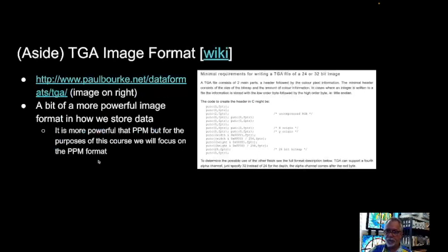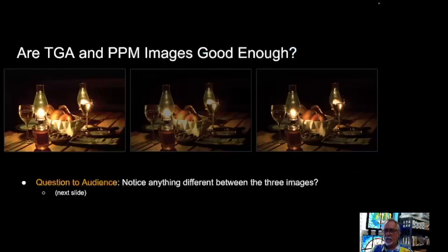There is another format that's very popular — it's TGA. It's a little bit more powerful. We're not using it for this course, but it is there. It's basically another full representation of an image. You can see some C code there of how you would add information to a file, but we're not going to do that.